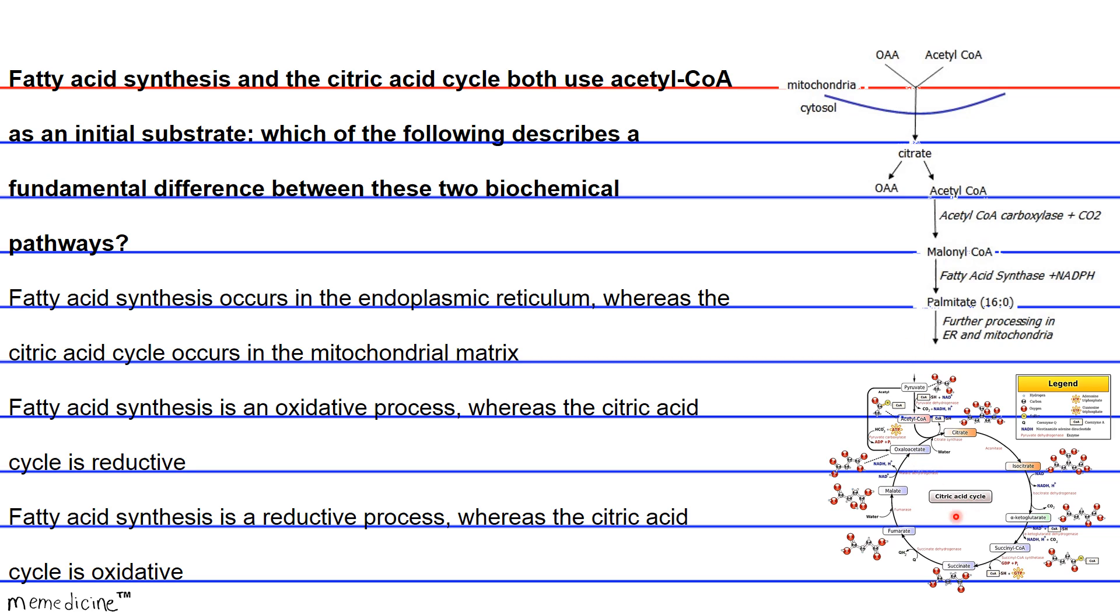The citric acid cycle is a metabolic process whereby pyruvate is oxidized. So fatty acid synthesis basically uses NADPH to reduce malonyl-CoA as well as acetyl-CoA. So basically, fatty acid synthesis is a reductive process, and the citric acid cycle is an oxidative process.